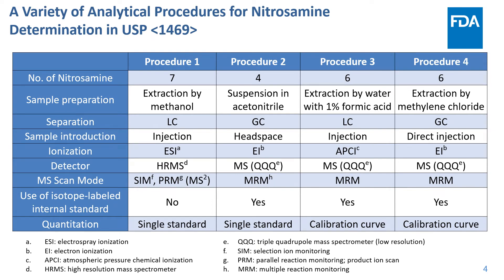The four analytical procedures included in USP 1469 for nitrosamine analysis are a good illustration of the analytical platform's expansion. Each of these four procedures is unique in its separation techniques, mass spectrometer detector, or quantitation approach, and exemplify the diverse analytical platforms for nitrosamine analysis in pharmaceuticals.